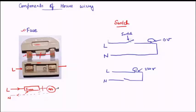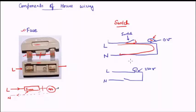Now, what does the switch do? Basically the switch is an on/off system. In the on scenario, the switch moves and closes the circuit, thereby allowing the current to flow freely through the circuit. As a result, since current is flowing through the circuit, the bulb will start glowing. That is how the switch system works, and as discussed, it needs to be applied to the live wire rather than the neutral wire.